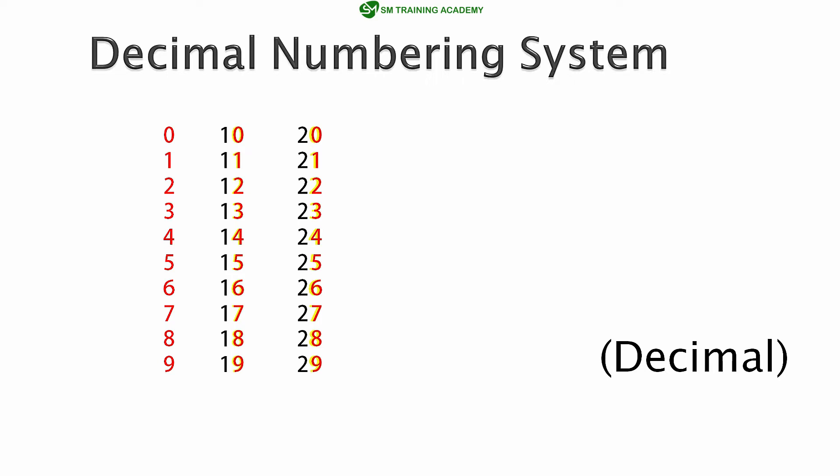Since this decimal numbering system has totally 10 possibilities starting from 0 to 9 for each order, it is also called the base-10 numbering system. It is base 10 because it has 10 possibilities from 0 to 9. This number 10 may also have been derived from the number of fingers a human being has, which is also 10, meaning we can count at most 10 numbers at a time using our fingers.